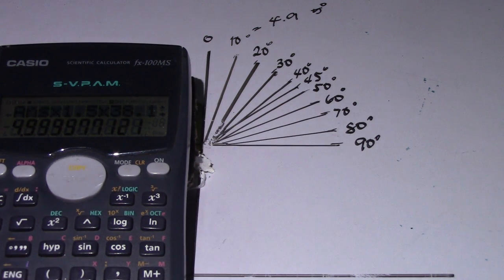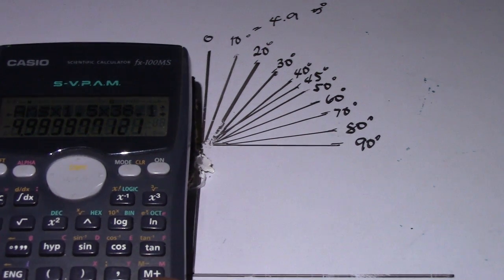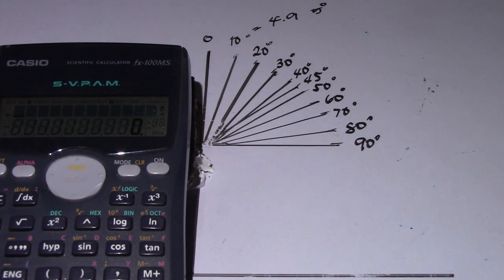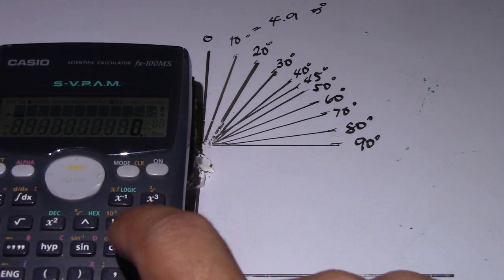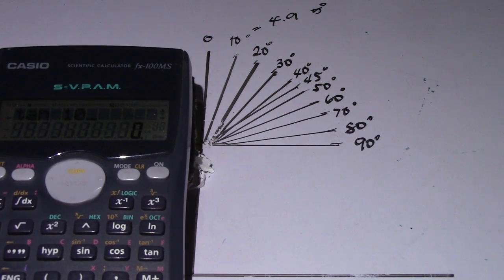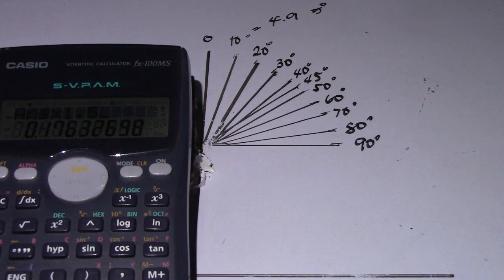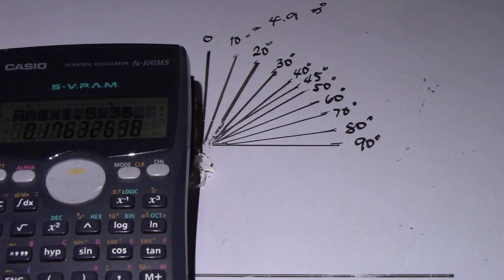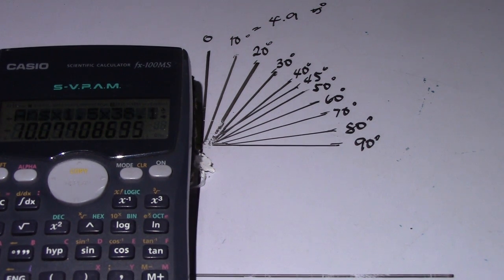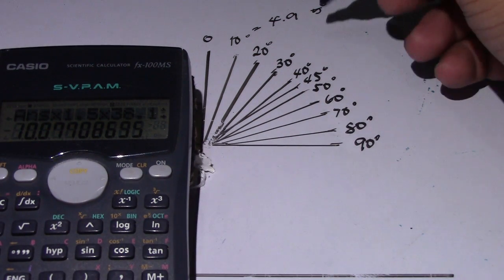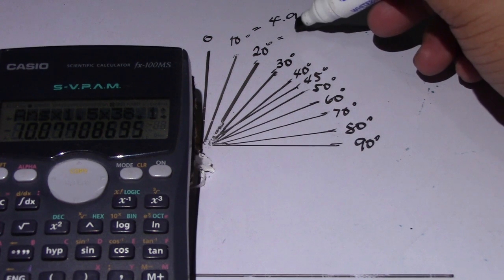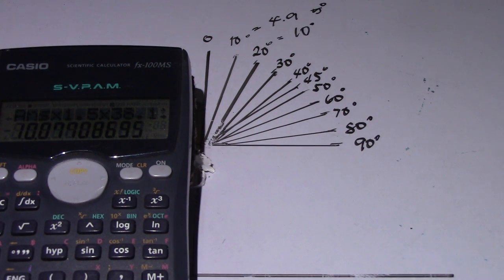Let's try 20 degrees. Half of 20 degrees is 10, so tangent of 10, multiply by 1.5, multiply by 38.1. Our answer — the constant angle for 20 degrees — is approximately 10.